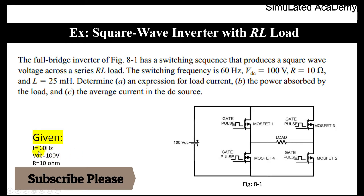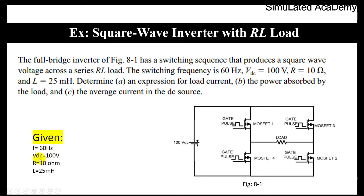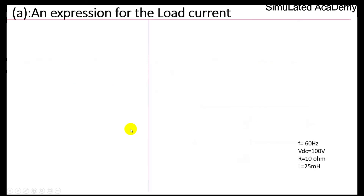We are given that the frequency is 60 Hz, the applied voltage is 100 V DC, the resistance is 10 ohm, and the inductor is 25 mH. Let's proceed with the solution. The first point is to find the expression for the load current.